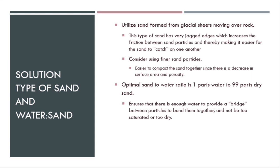When looking at the optimal sand to water ratio, it was seen that one part water to 99 parts sand was the optimal ratio because this ensures that there was a bridge between the different sand particles to connect them together and bond while still leaving it dry enough so that it did not become too soup-like and muddy and just run off each other.